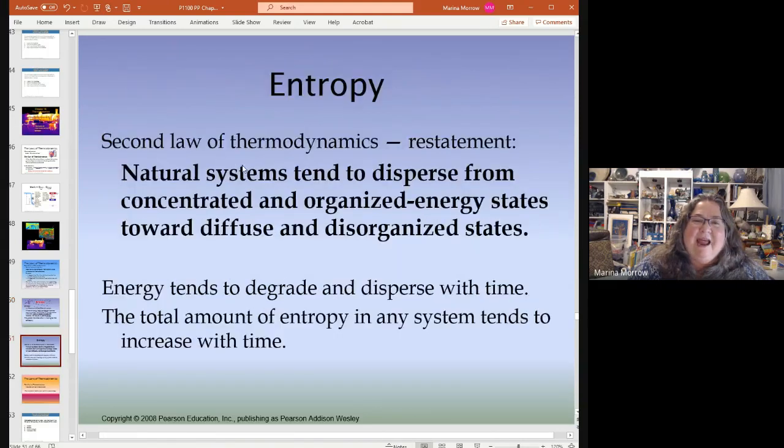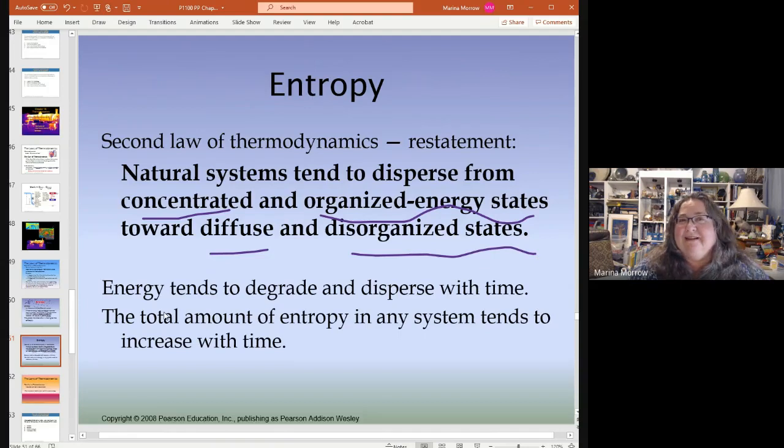Natural systems tend to disperse from concentrated and organized energy states towards diffuse and disorganized states. So you buy a gallon of gasoline, you put it in your car and you run your car. The gasoline burns up, heat is basically the result. There's heat where the roads met the tire, there's heat in the car that radiates into the air, and so the energy has dispersed. It was in a concentrated form and now it's been dispersed and it's disorganized and diffuse.